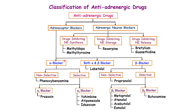The adrenoceptor blockers are classified according to what type of adrenergic receptor they block. For alpha blockers, they can be non-selective — blocking both alpha-1 and alpha-2 receptors (example: phenoxybenzamine) — or selective, blocking either alpha-1 or alpha-2. An example of a selective alpha-1 blocker is prazosin. For selective alpha-2 blockers, examples include yohimbine, atipamezole, and idazoxan.